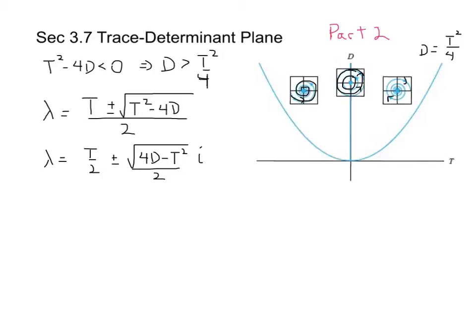That's what the trace-determinant plane allows us to understand about complex eigenvalues. If we're to the left of the d-axis but above the curve d equals t squared over 4, we have a spiral sink. Anything on the right side is a spiral source, and anything along the d-axis is a center.